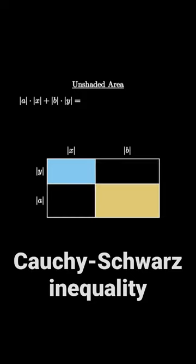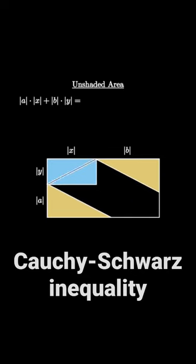But now we can break up both of the shaded rectangles into triangles and slide them into opposite corners like this. Now the unshaded area is given by the area of this parallelogram.